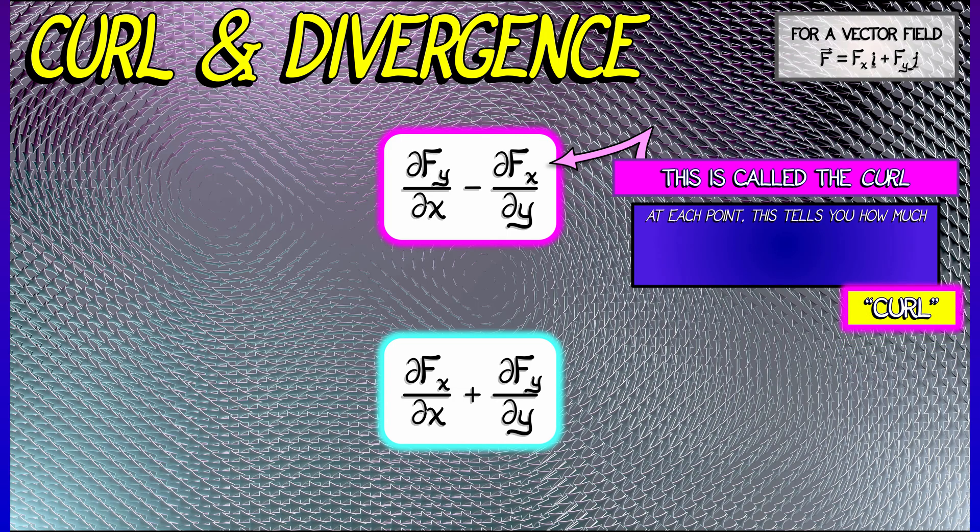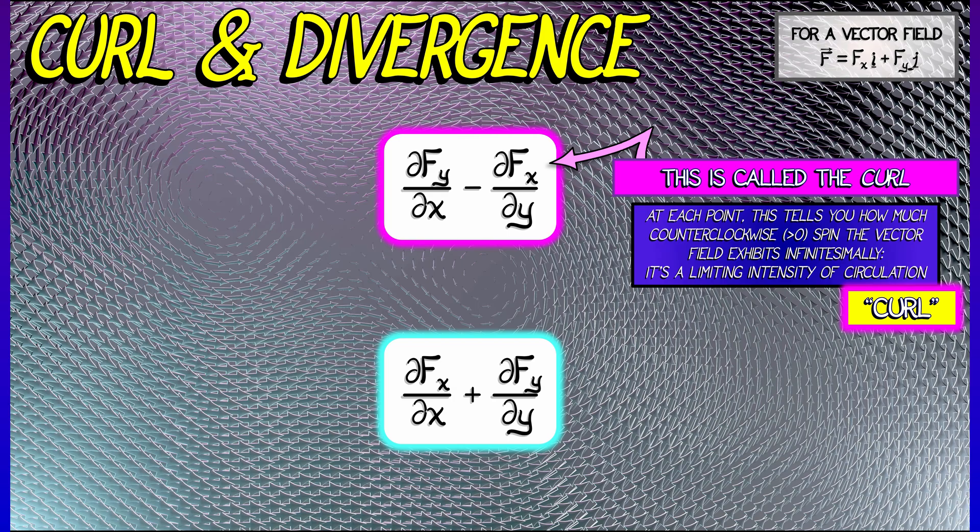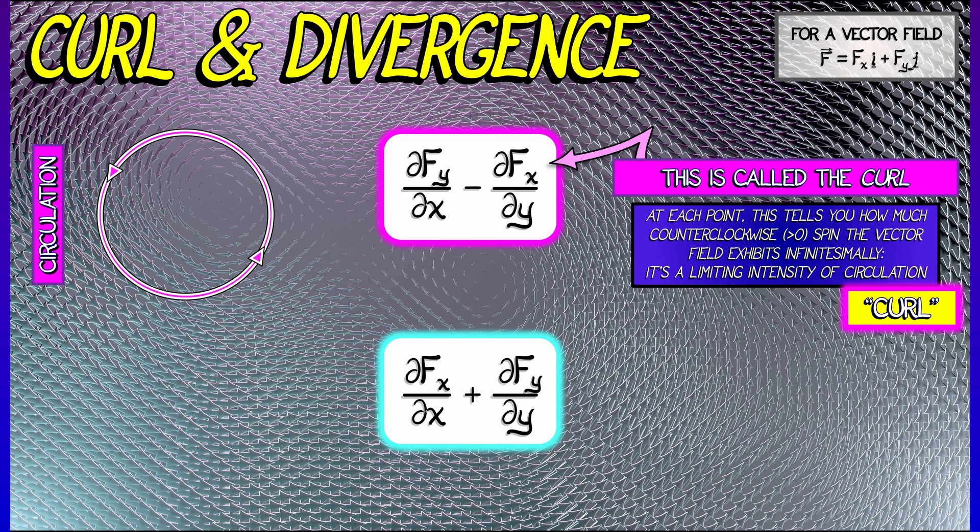And what it means is an infinitesimal spin. This tells you whether at the infinitesimal level the vector field is spinning counterclockwise, positive, or clockwise, negative. And the way to see this is to think about computing the circulation along a very small loop, a circle, and then just shrink that circle down to a point and look at this limiting rate of circulation. Thanks to Green's theorem, this gives you this density, this curl at a point.